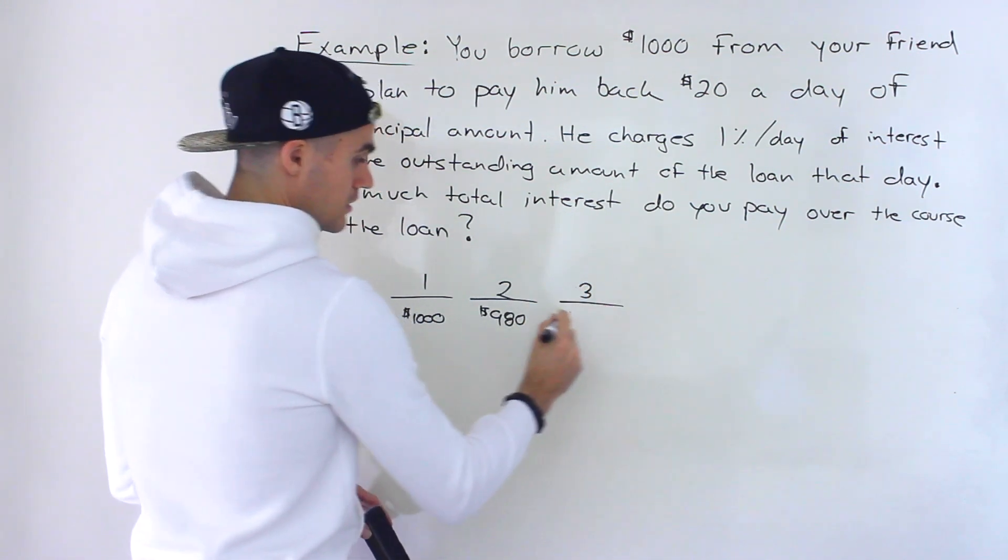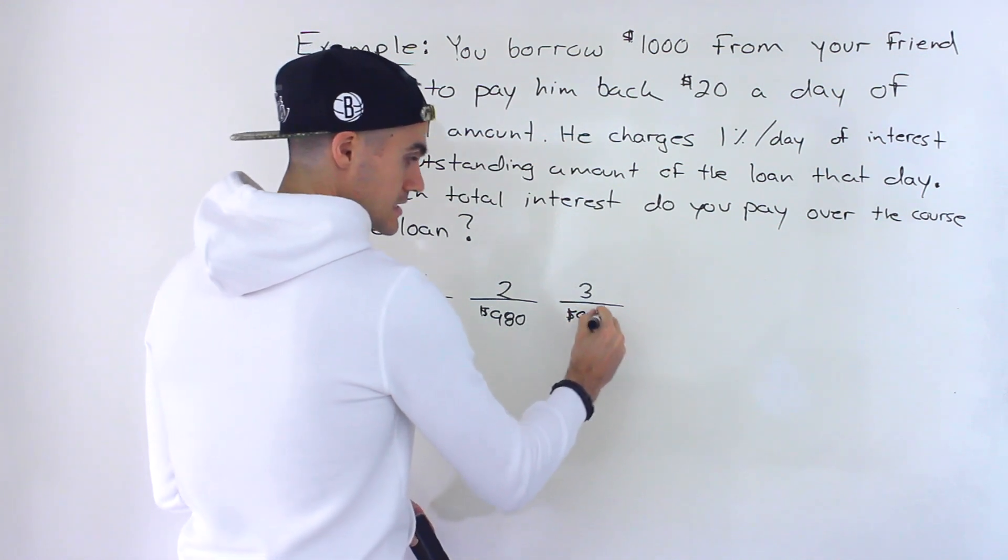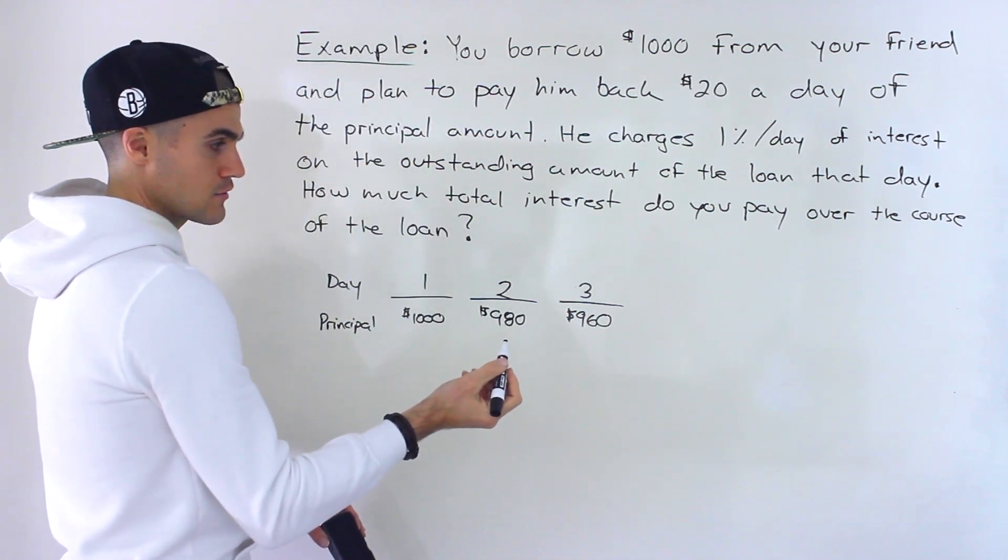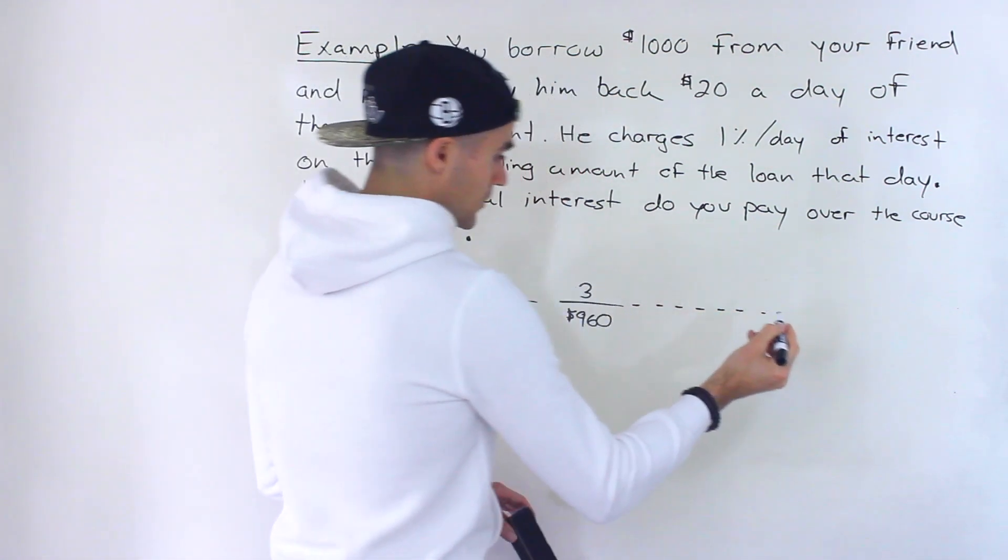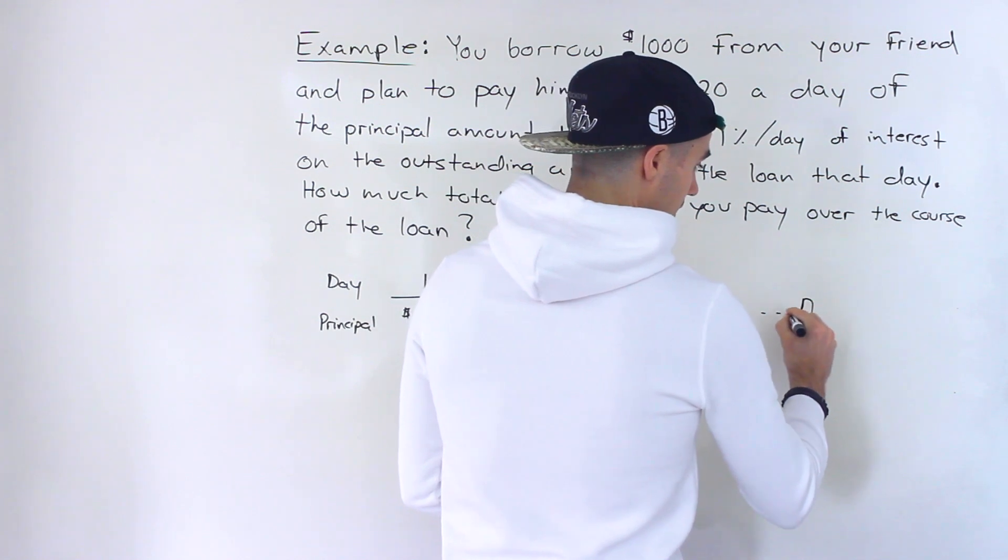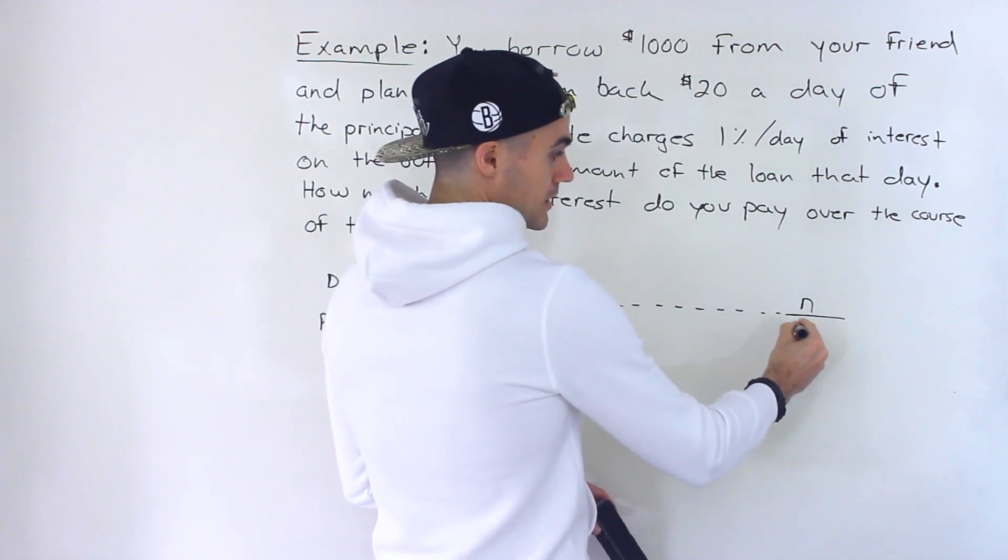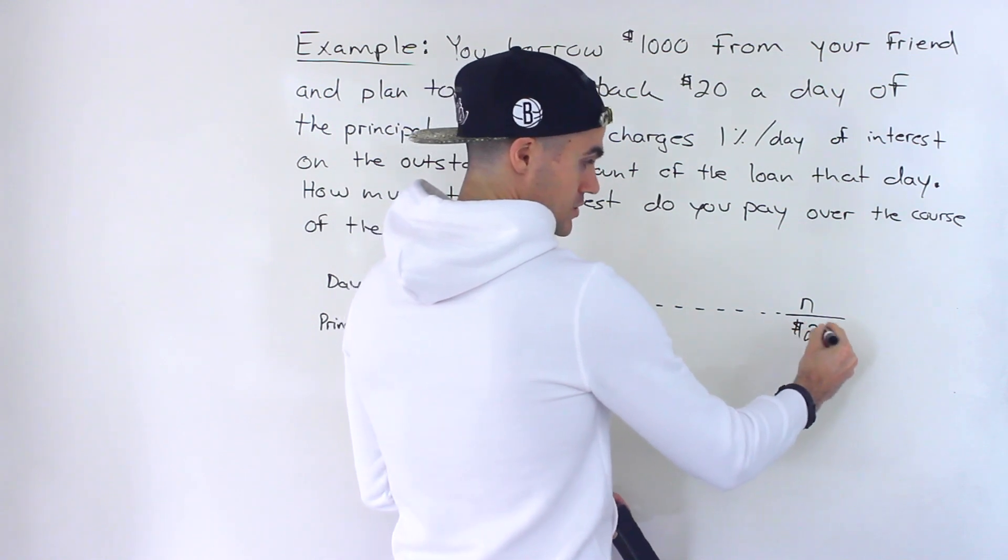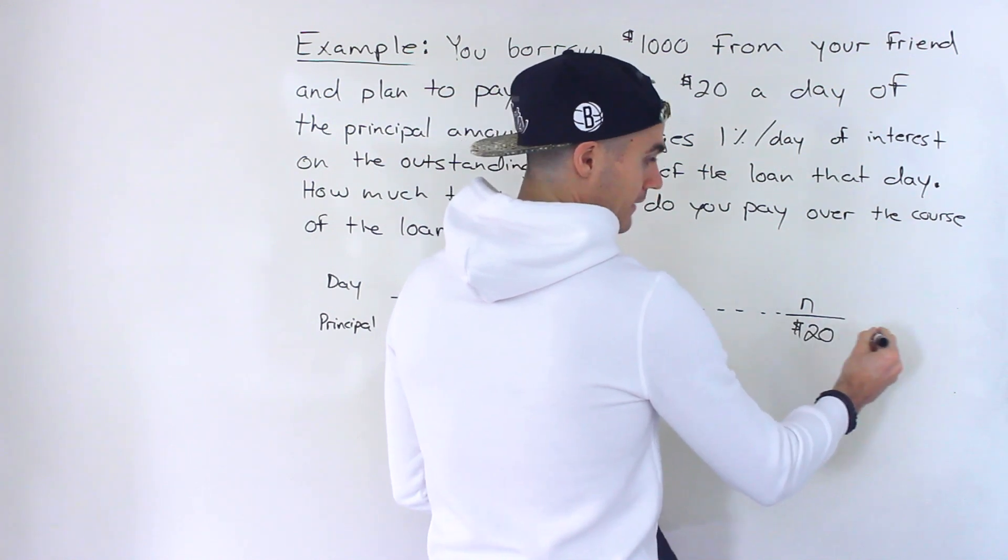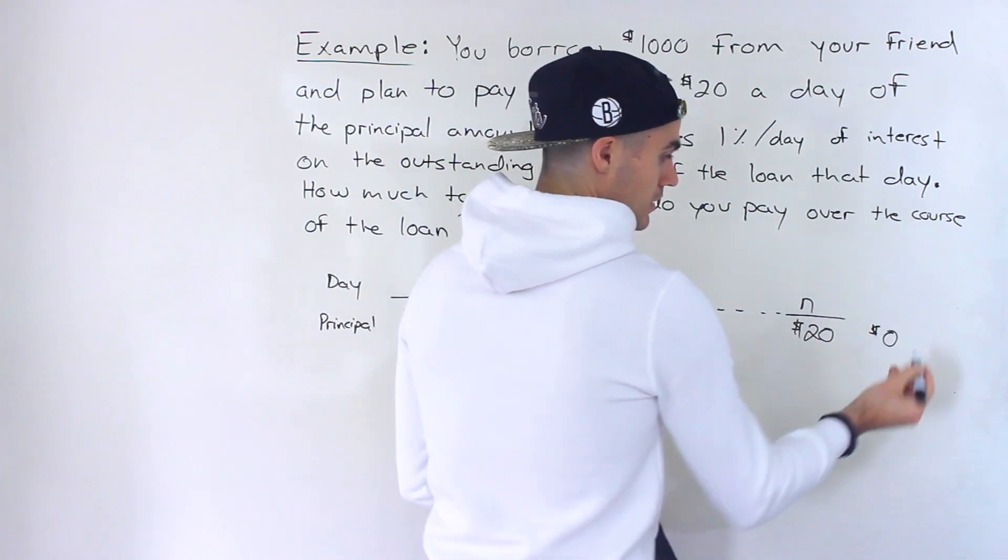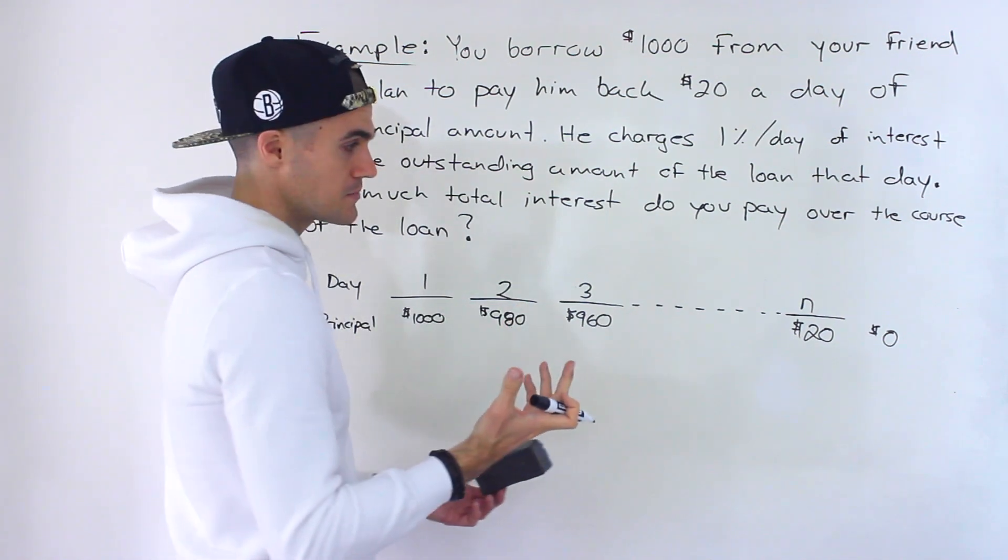And then in day three, you're going to pay back $20. So then it's going to be $960 left to pay back at day three. And then so on and so on. And then what's going to happen is at some day, let's call it N, there's going to be $20 left to pay back. And then finally, you're going to pay back that $20. And then there's going to be no more principal left to pay down.